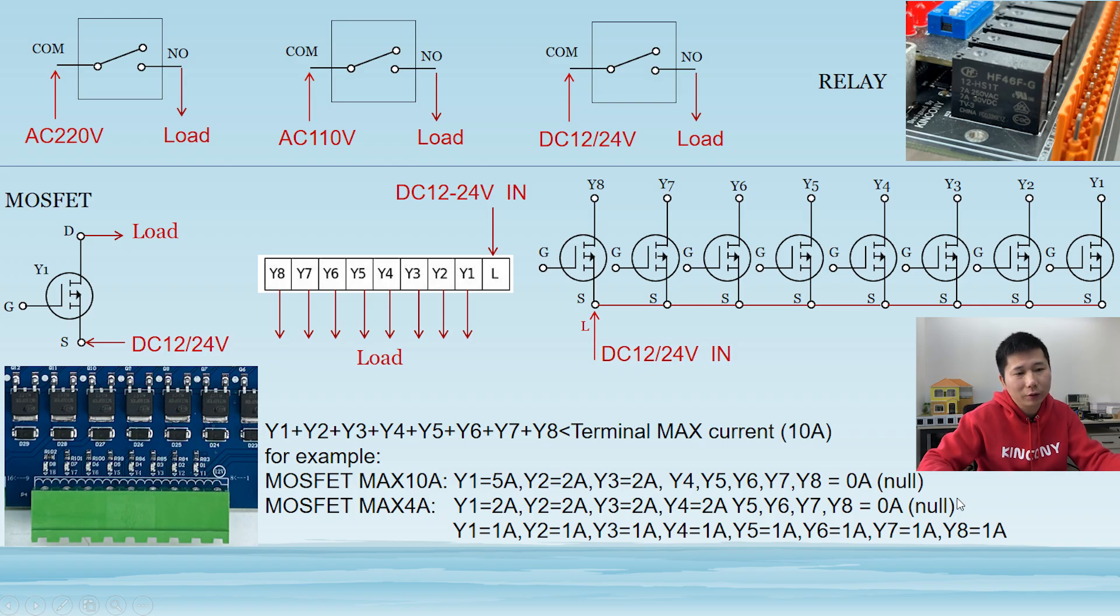Okay, you can see, if the second example, that, Y1 is 2A, Y2 is 2A, Y3 is 2A, Y4 is 2A. So, this can add together, is 8A. So, make sure, your Y5, Y6, Y7, Y8, have a smaller current, just, not, greater than 10A.